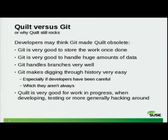This is a question I often get: someone in this room asked me even yesterday — 'We have Git now, it's so great and powerful, why would you still need Quilt?' I beg to disagree. Git is very powerful and very good to store work once it's done. You can handle huge amounts of data at a reasonable space price. It's very fast, handles branching better than any other tool before. Git also makes digging through history very easy with 'git blame' and 'git log'.